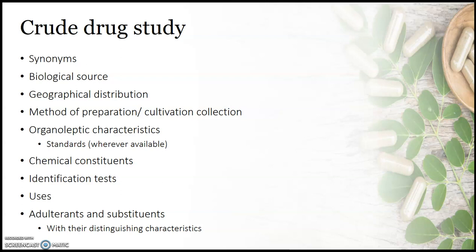That is: synonyms, which we have already discussed in the pharmacognostic scheme — synonyms are nothing but local names or vernacular names. Biological source, which is nothing but a definition of the crude drug containing the part of the plant that is useful, along with the binomial botanical name, family, and major active chemical constituent.